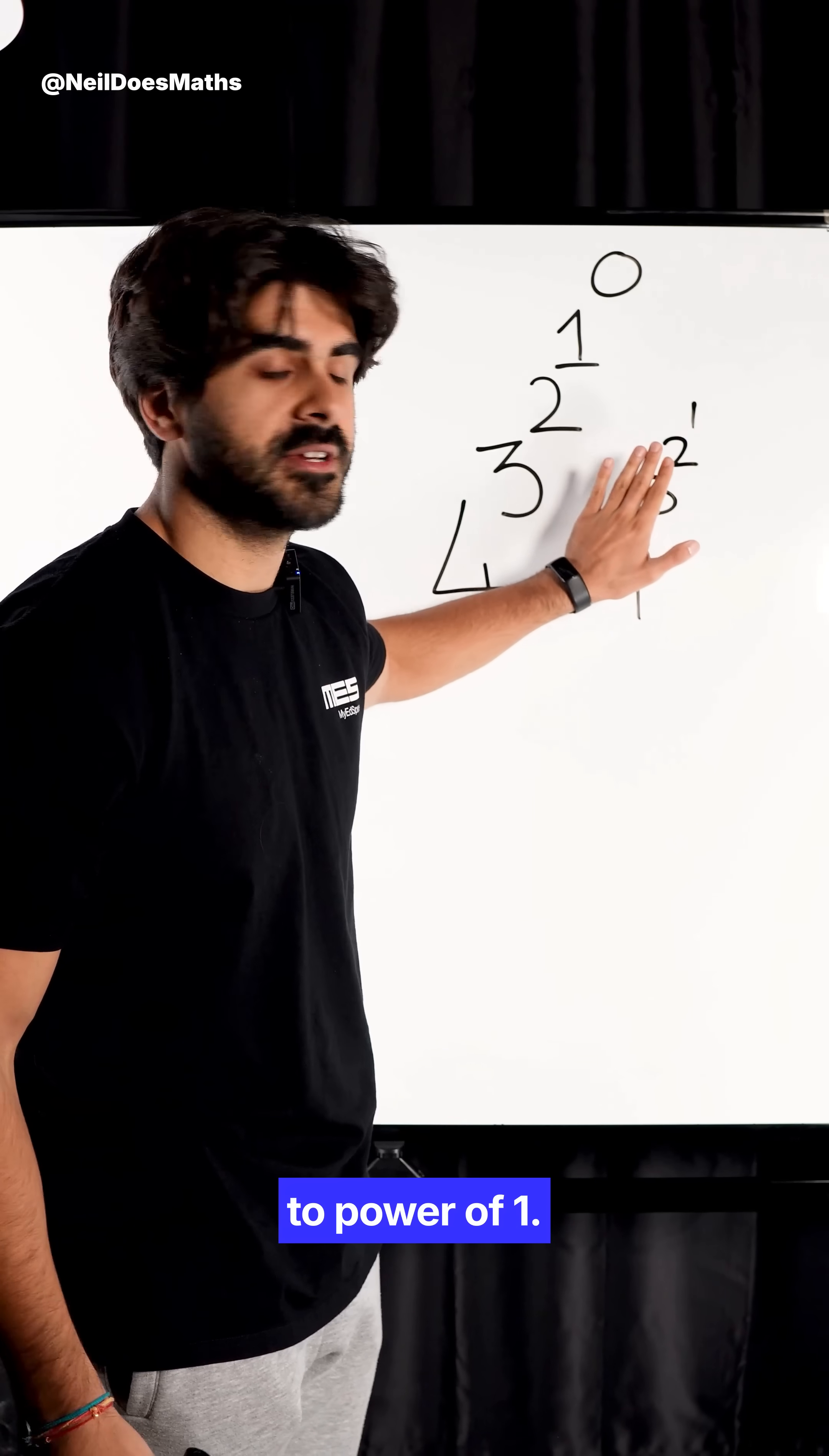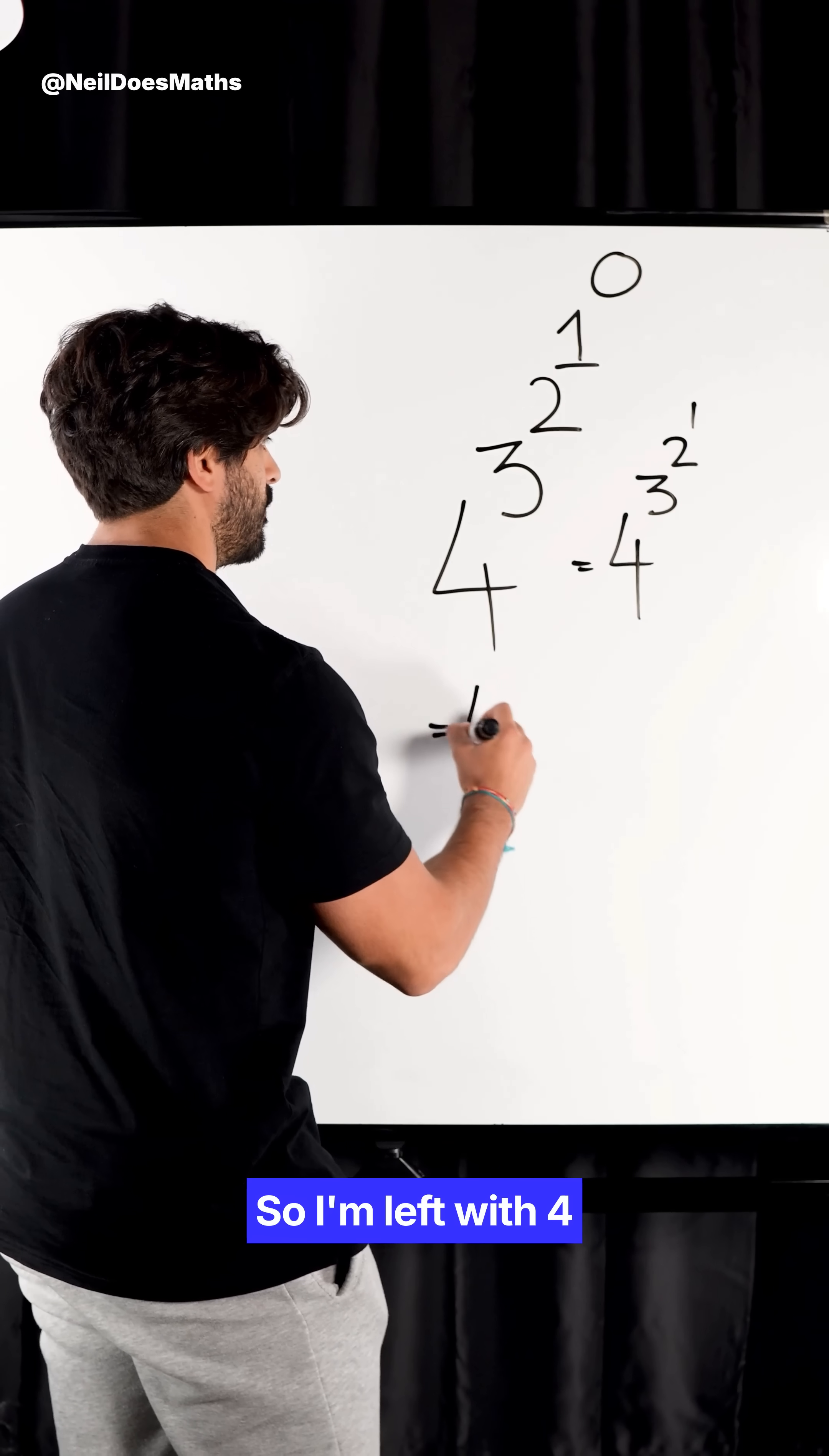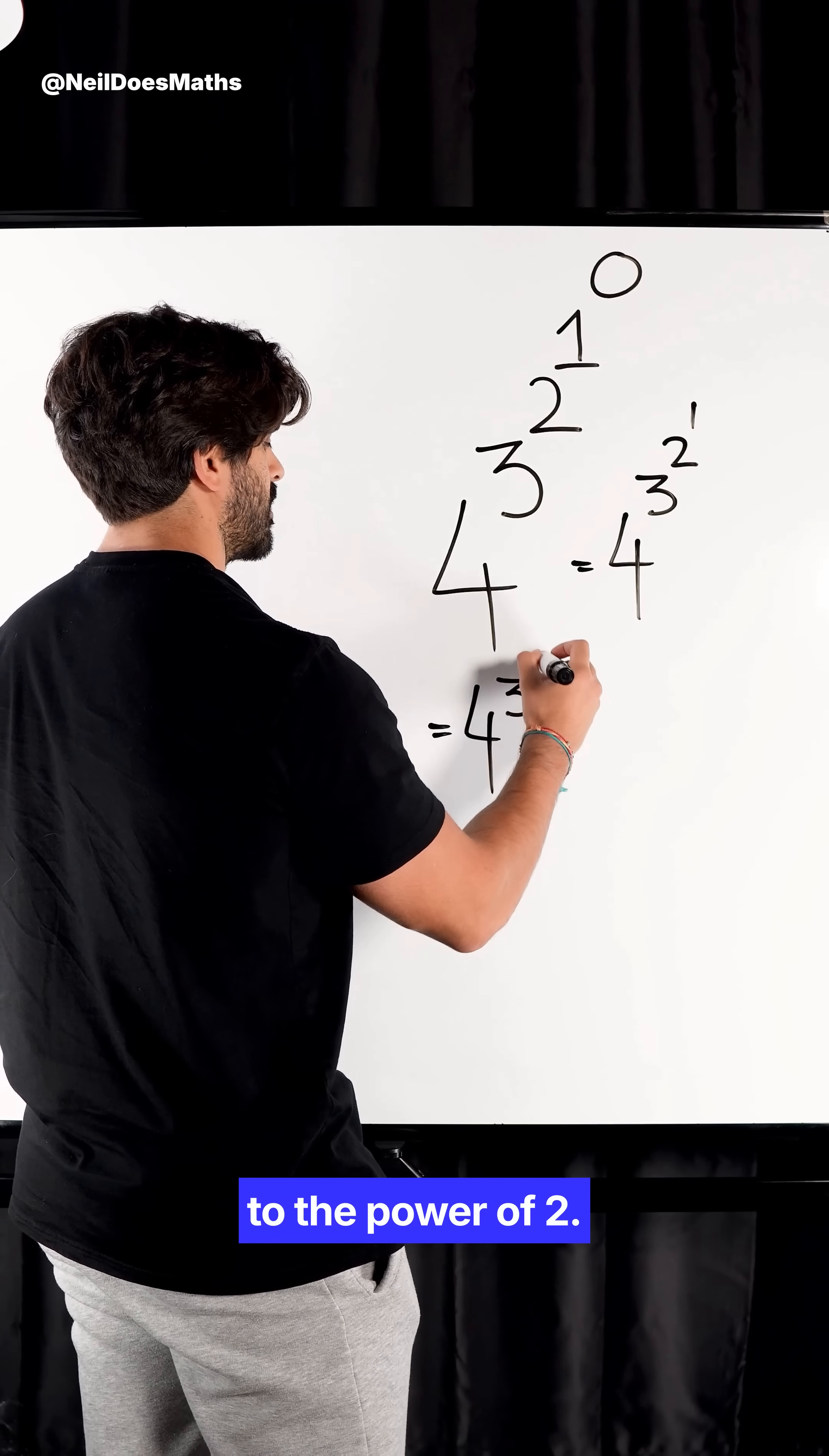All right, next we're left with two to the power of one. Anything to the power of one is just itself. So I'm left with four to the power of three to the power of two.